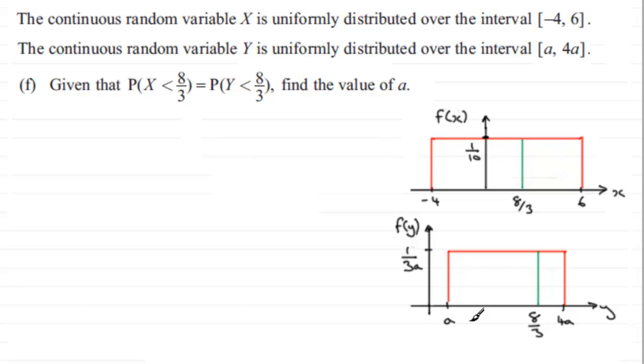I'm assuming it's a value that's going to be between A and 4A. But what we're saying essentially is that the area to the left of 8 thirds for X, that represents the probability, is exactly the same as the area to the left of 8 thirds in this diagram here for Y.